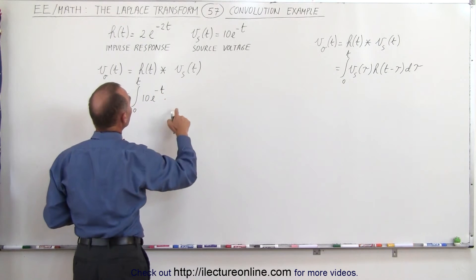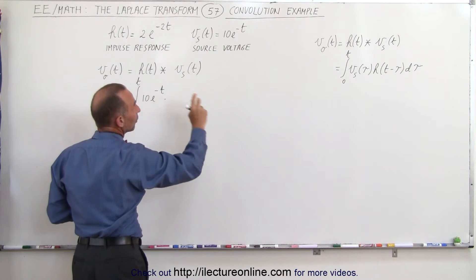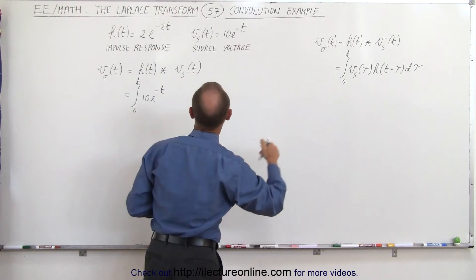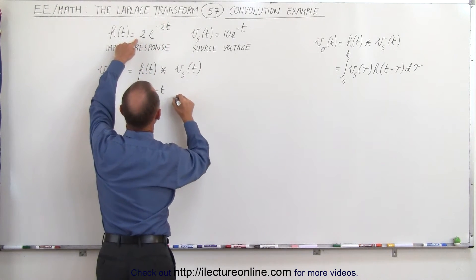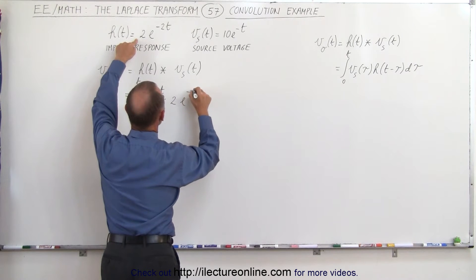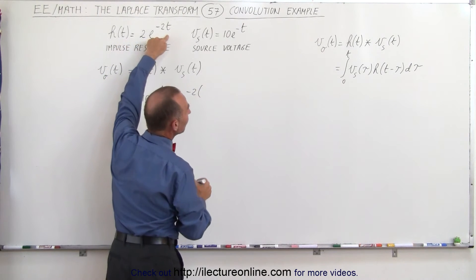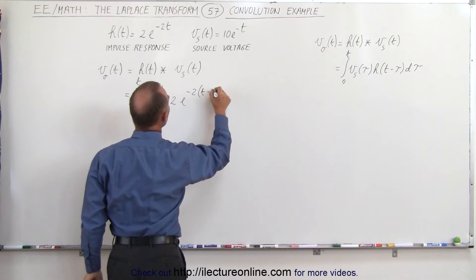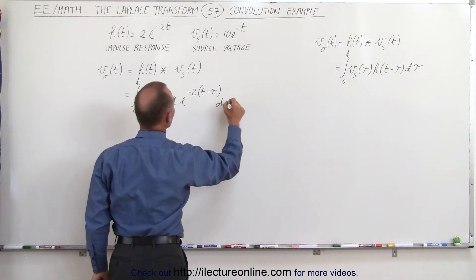And then we multiply that times the impulse response, so we're going to write it as h of t minus tau, so that becomes 2e to the minus 2, and instead of t, we're going to write it as t minus tau d tau.